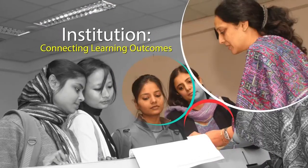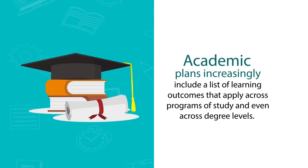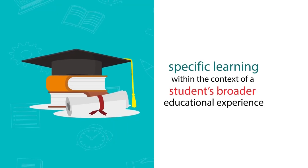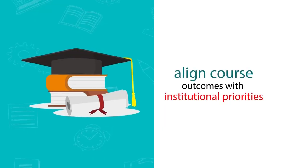At the institutional level, academic plans increasingly include a list of learning outcomes that apply across programs of study and even across degree levels. These outcomes provide an academic vision for the institution, serve as guidelines for new programs and programs undergoing review, and communicate to members of the university and the public the academic values and goals of the university. The best learning outcomes address course-specific learning within the context of a student's broader educational experience, and one way to contribute to a coherent learning experience is to align course outcomes with institutional priorities.